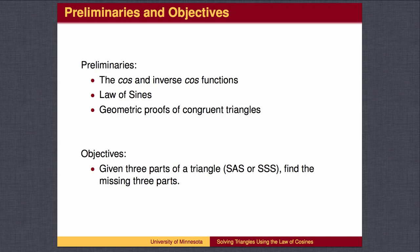In this lesson, we will use the law of cosines to find the missing parts of a triangle in two cases. First, when given the lengths of two sides and the measure of the angle between them. Second, when given the lengths of all three sides.